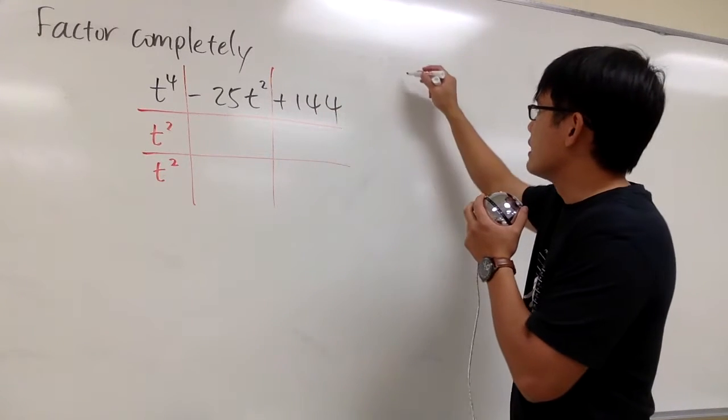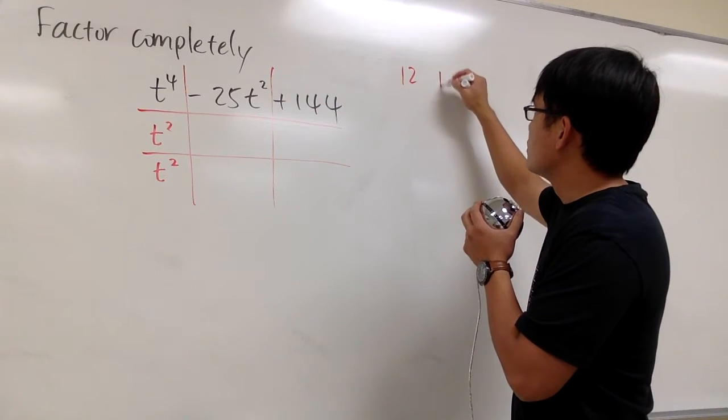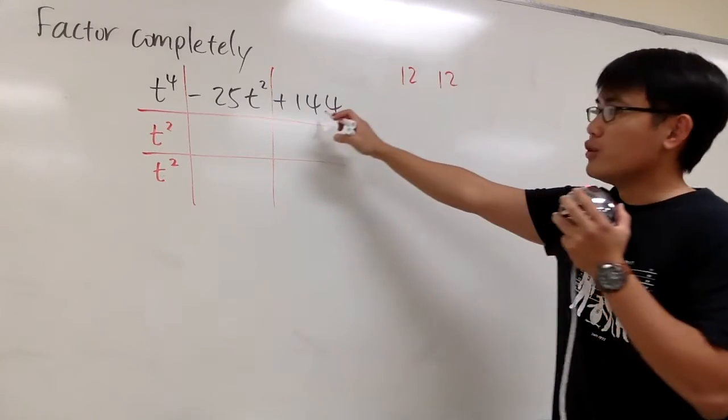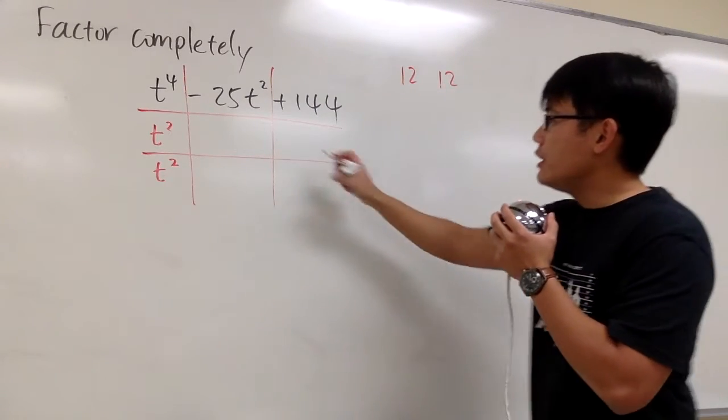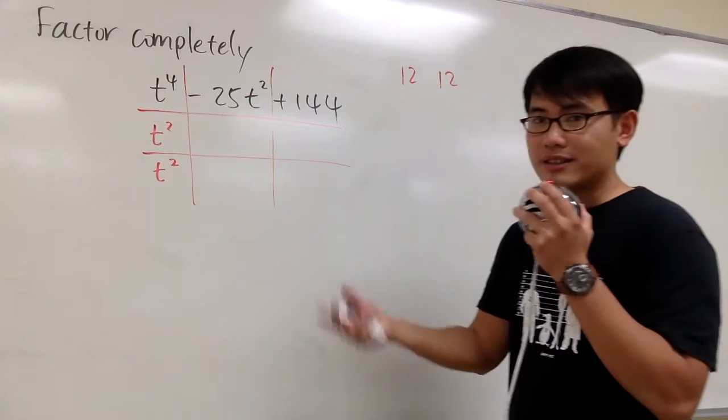I'm going to look at 144 as, let's say, 12 times 12. 12 times 12 is going to be 144, right? But then if I put in, let me just show you, this is a total process I have to work out.